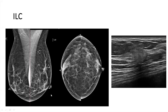Here is an imaging example of infiltrating lobular carcinoma. This patient presented with multiple palpable areas. We do see a slightly asymmetric area in the upper-outer breast, but it is very, very subtle. When we look on ultrasound, we see a slightly hyperechoic lesion, and on biopsy, this was invasive lobular carcinoma.